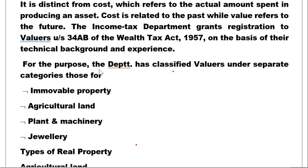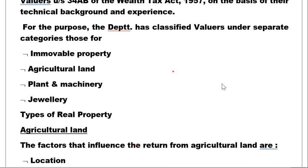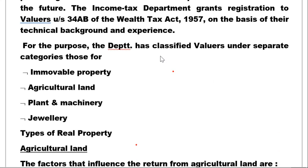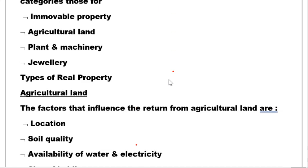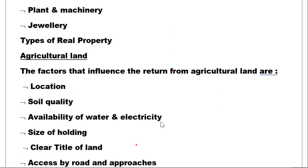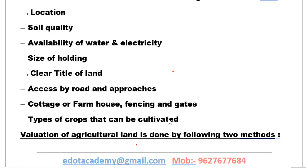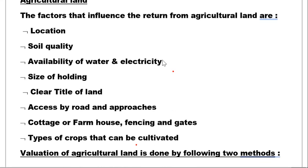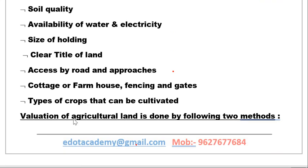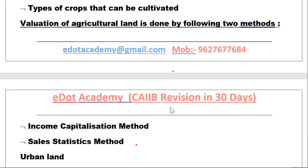Types of real property include agricultural land, plant and machinery, and jewelry, each valued by registered valuers. Factors influencing the return on agricultural land include: location, soil quality, availability of water and electricity, size of holding, clear title, access by road, cottage or farmhouse, fencing, gates, and types of crops. Valuation of agricultural land is done by two methods: the income capitalization method and the sale statistics method.